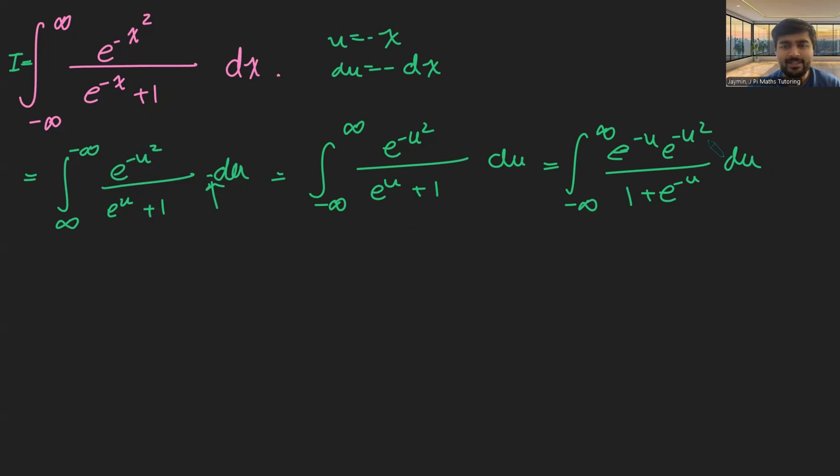But what's really nice about this is the fact that u here is just a dummy variable. It does not matter what u actually is as a letter, because when we integrate this out, the u's will disappear, and this will just be a number. What do I mean by that?